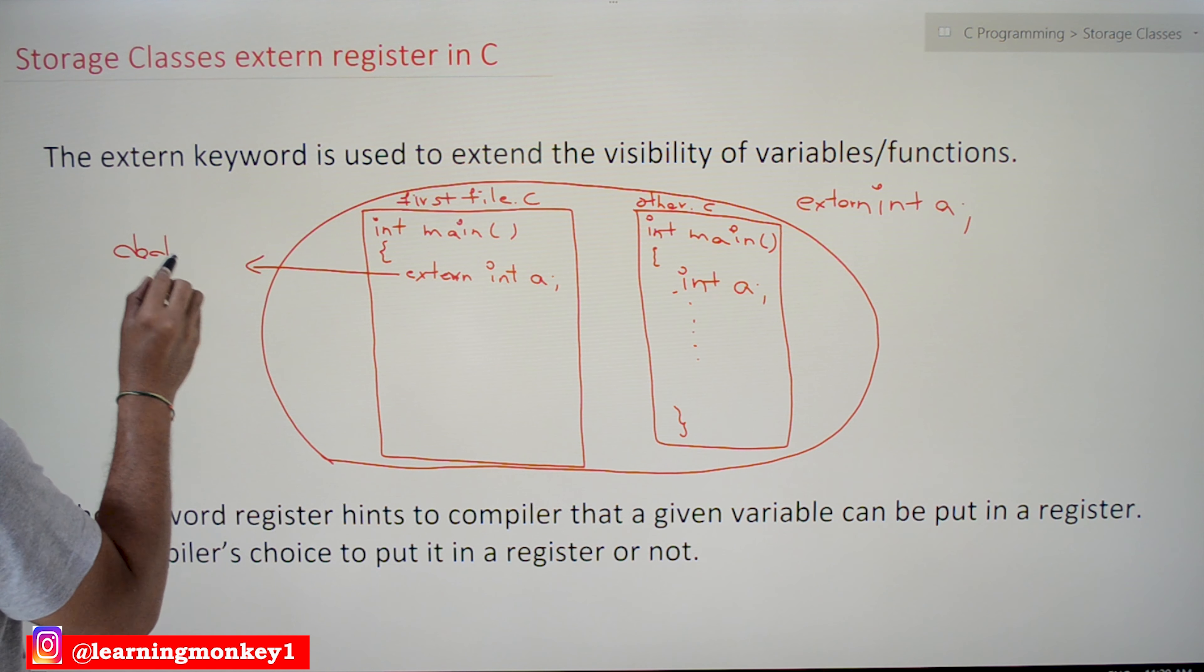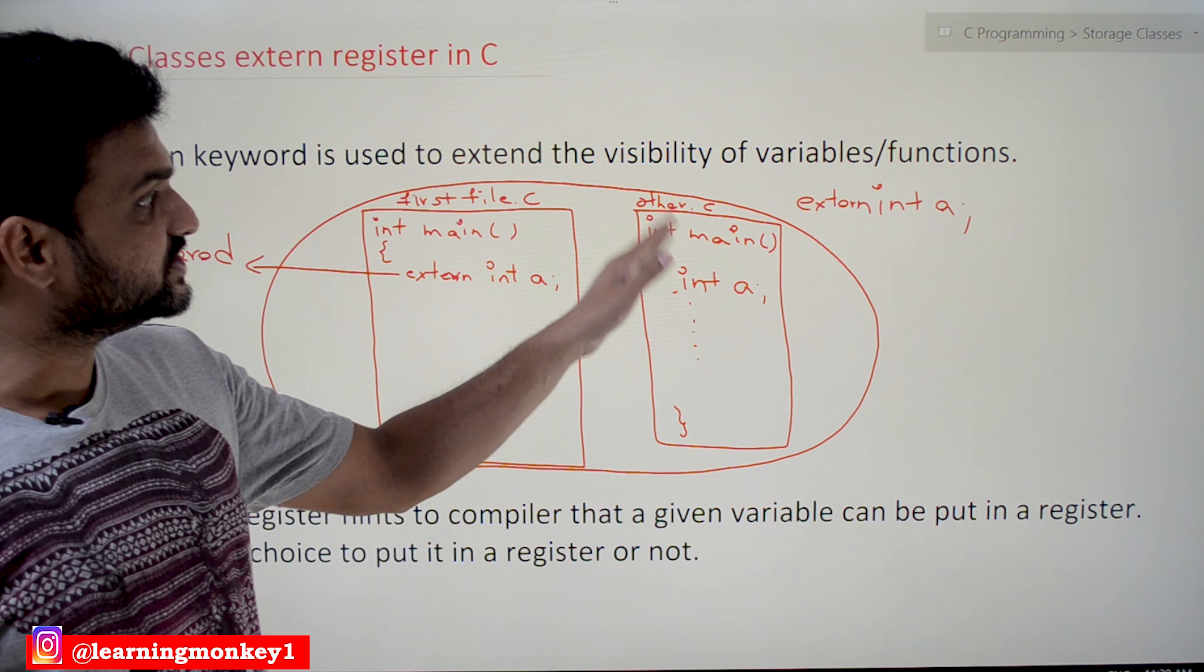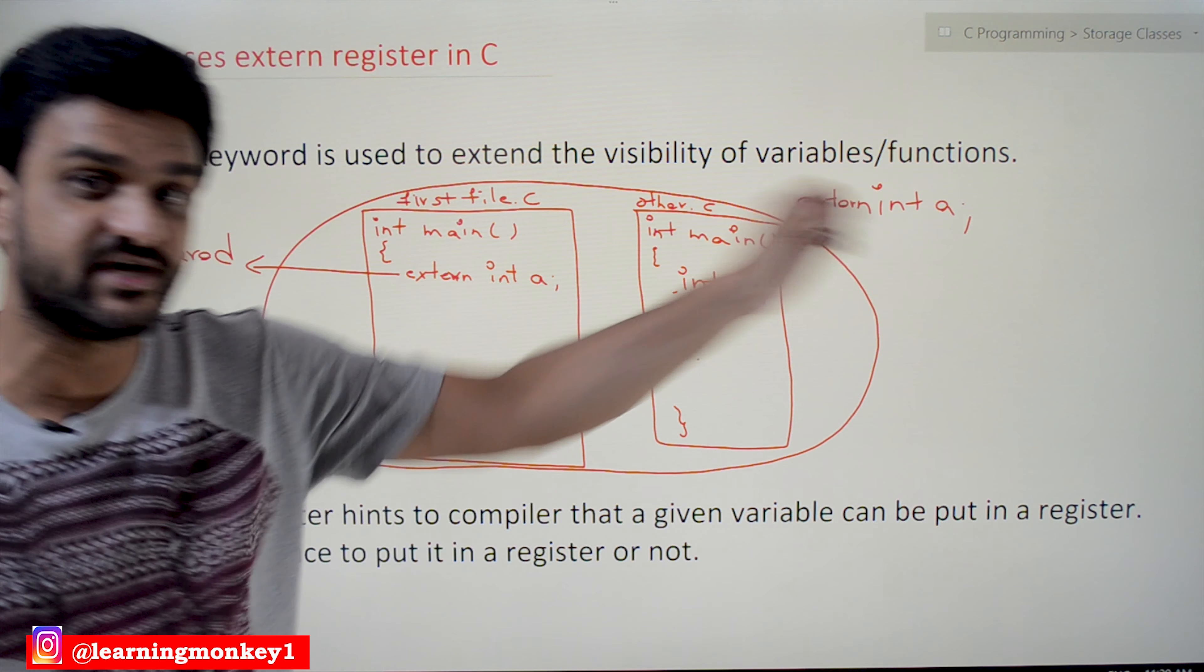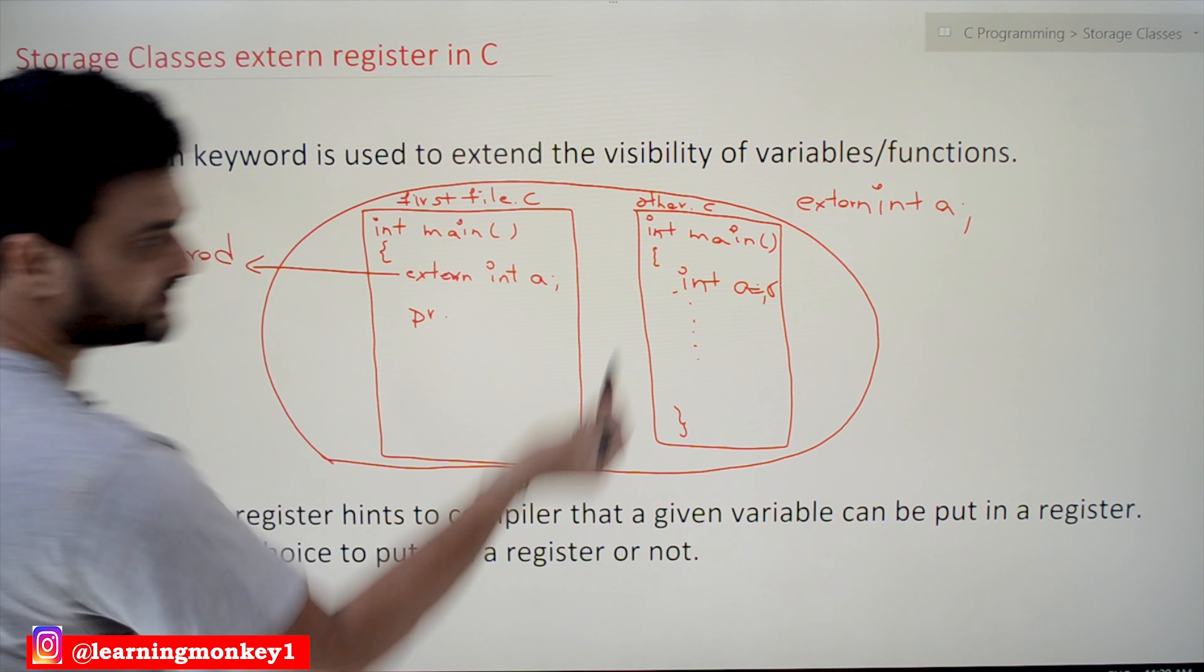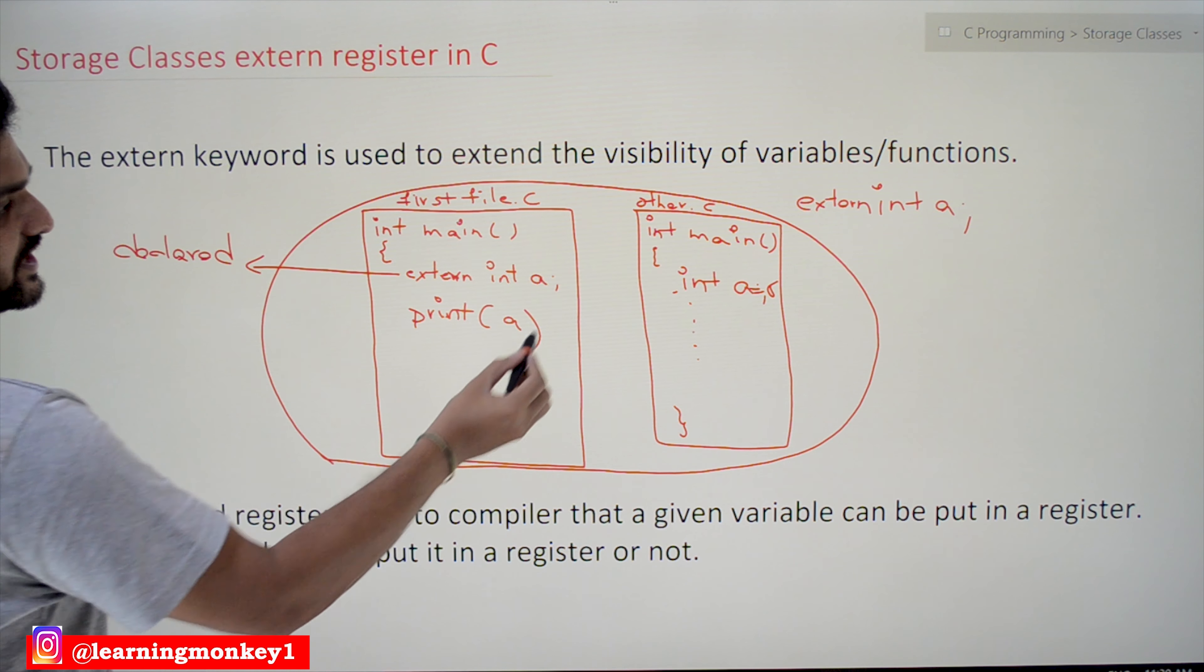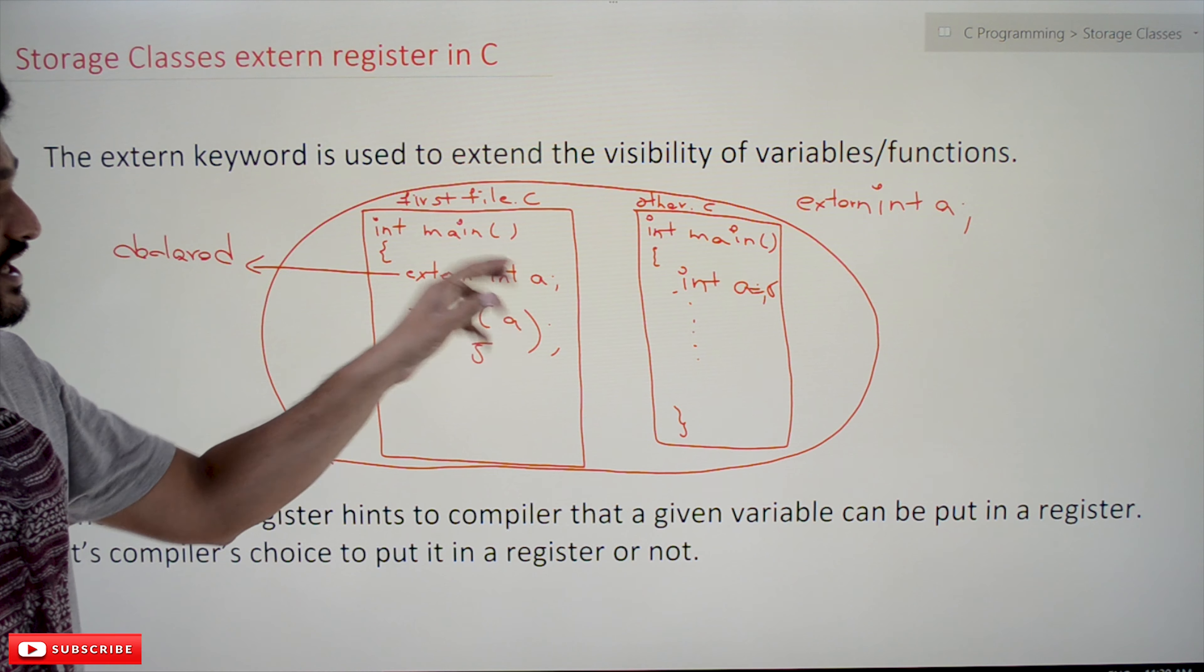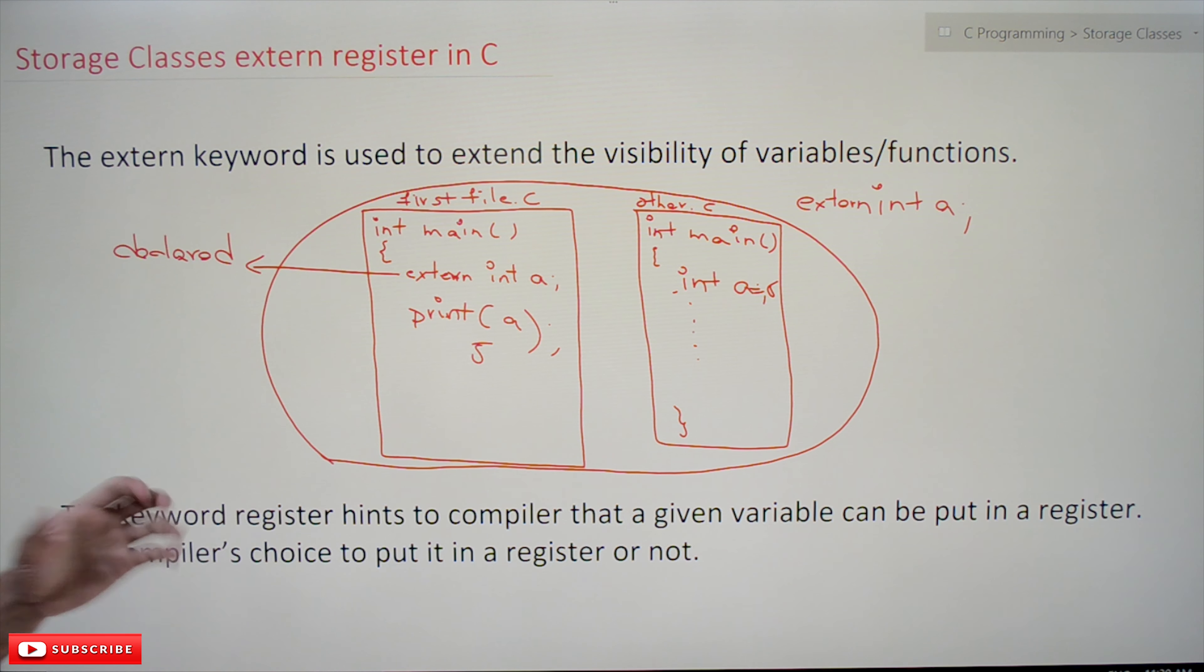Extern int a means that it is used externally, here it is only declared. The point you have to understand is declared extern means elsewhere it is used. Where it is used? It is used in other dot c. Extern int a means we are just declaring it in this file but the definition is made elsewhere. If you have assigned it as five, a equals five, if you want to print a, this will get printed. The value five will get printed. Here we have just declared to know that this integer a is there elsewhere, so for that we are going to use extern.